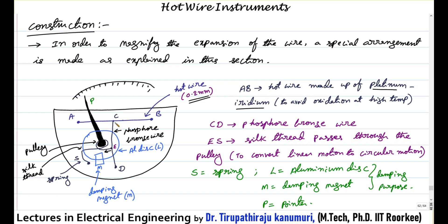The spring tries to pull the silk thread downwards. There is one aluminum disk used along with a damper magnet. This aluminum disk is directly connected to the pulley. Whenever the pulley or the pointer moves, this aluminum disk also moves, cutting through the flux of the permanent damping magnet, producing the required damping torque.